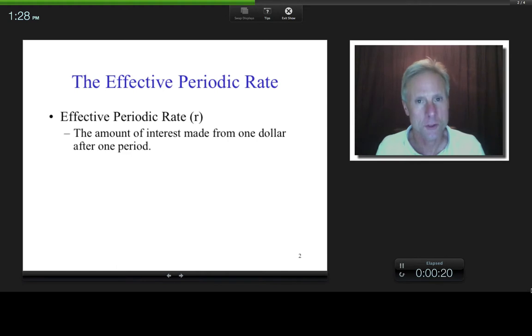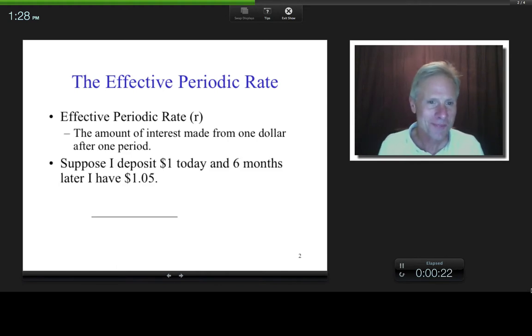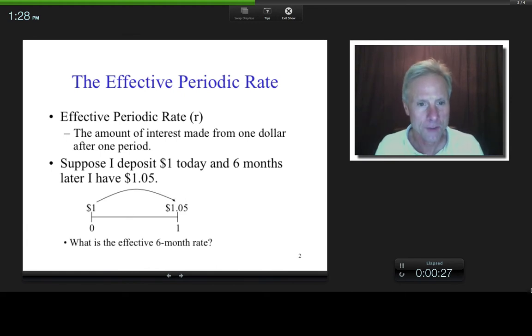So let me illustrate. Suppose I have a dollar today, and six months later I have a dollar five. It's grown into a dollar and five cents. Here's an example of a cash flow timeline diagram. I'm calling time zero today. Can I make these periods whatever I want them to be? I can, right? So I've decided there's six months. This is one six-month period later.